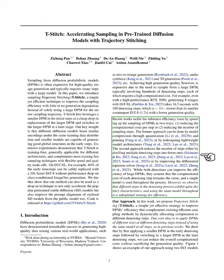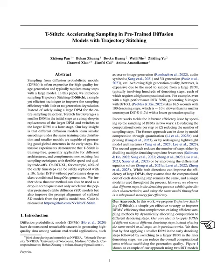We've observed that this one-size-fits-all approach to the denoising process isn't the most efficient. Different steps in the denoising process have unique characteristics, suggesting that using the same model for all steps might not be the best strategy for efficiency. To address this, we introduce a new strategy called trajectory stitching, or T-Stitch for short.